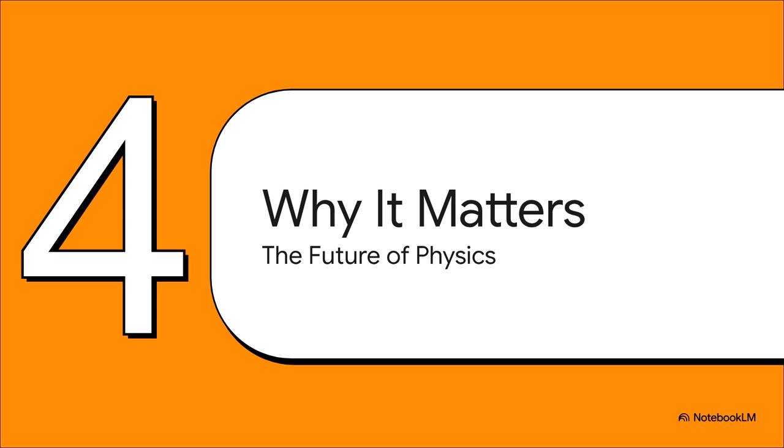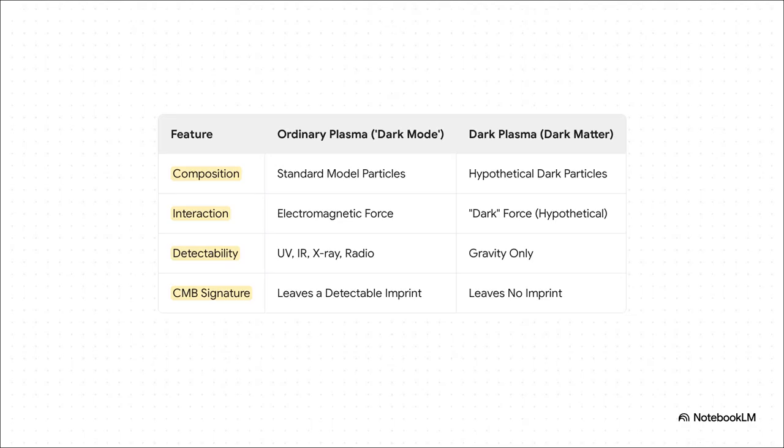So why get so worked up about this distinction? I mean, it might just seem like a bunch of scientific nitpicking, right? But believe me, getting this right is absolutely critical for the entire future of physics. So let's just lay it all out. Side by side, you've got dark mode plasma, made of normal particles, uses the normal electromagnetic force, and we can totally detect it with our instruments. Then you've got the real dark plasma, made of hypothetical dark particles, using a hypothetical dark force, and only detectable by its gravity. One idea was completely ruled out by the CMB, the other one fits perfectly. They could not be more different.